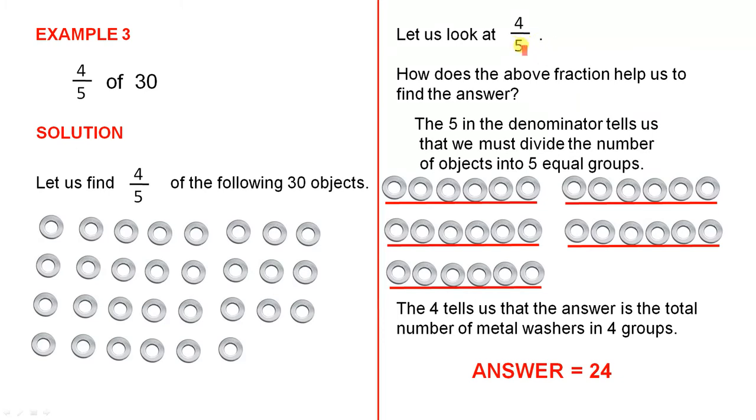So here's our fraction of 4 over 5. Now remember, the number down the bottom, this one here which is called the denominator, always tells you how many groups we need, and they are equal groups. So the 5 in the denominator tells us that we must divide the number of objects into 5 equal groups. And that's what we've done. 1, 2, 3, 4, 5 equal groups. Each group has 6 washers.